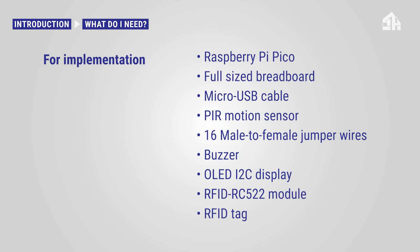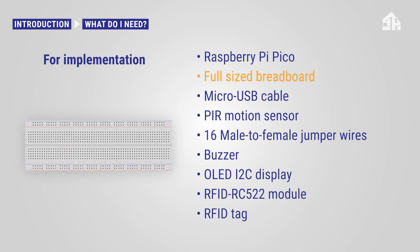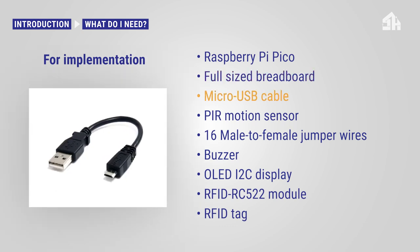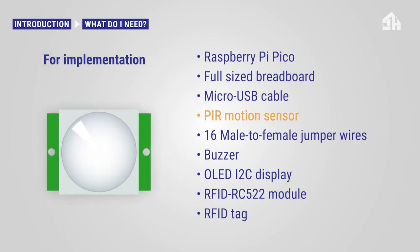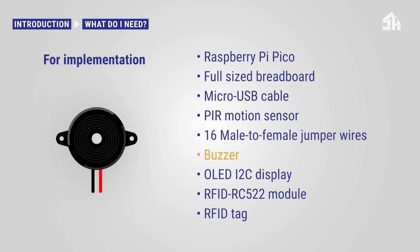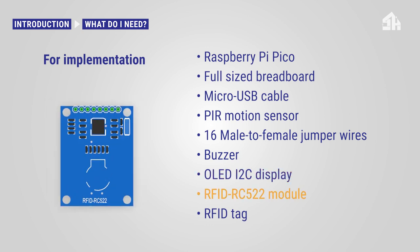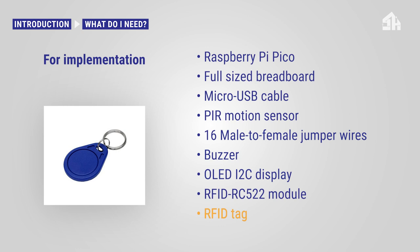For implementation, you need the following: a Raspberry Pi Pico, a full-size breadboard, a micro USB cable, the PIR motion sensor, 16 male to female jumper wires, the buzzer, the OLED I2C display, the RFID RC522 module, and the RFID tag.